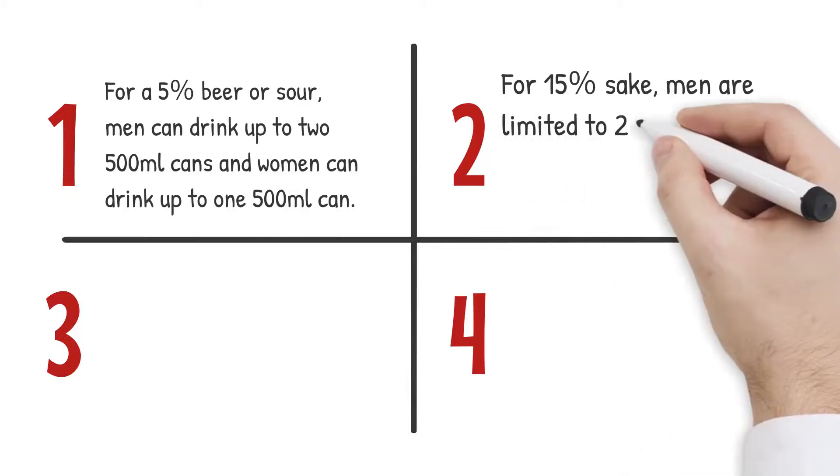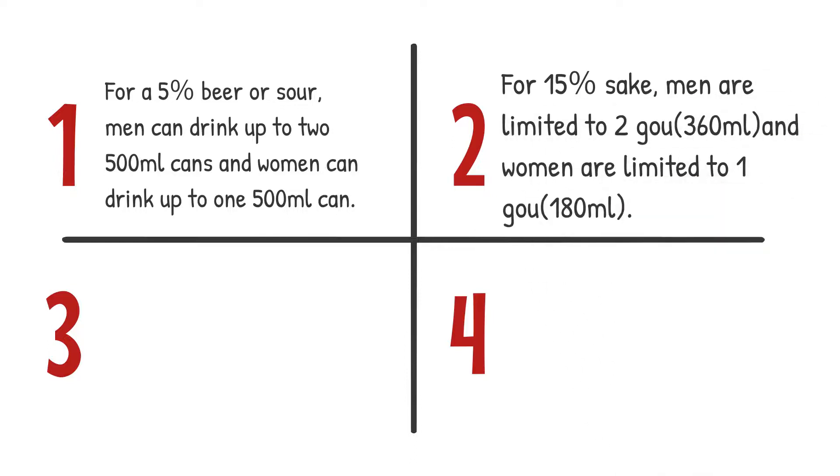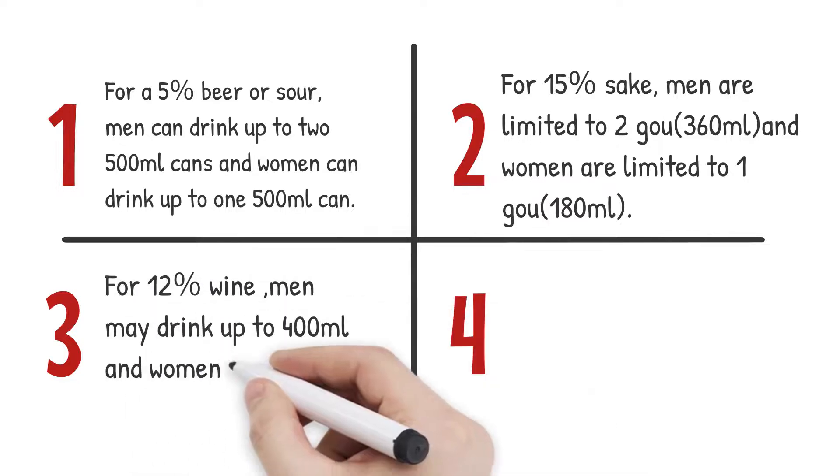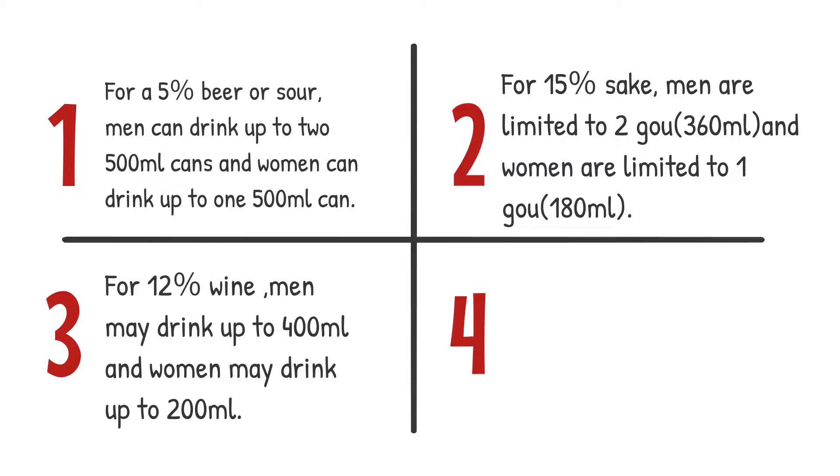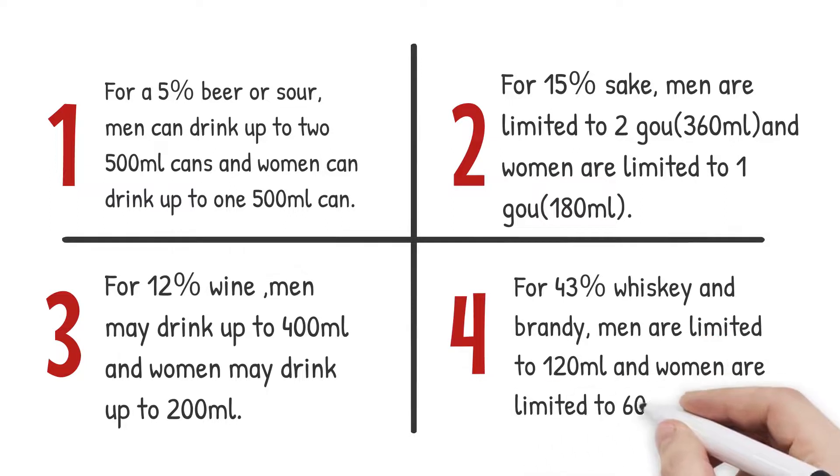For 50% sake, men are limited to two go and women are limited to one go. For 12% wine, men may drink up to 400ml and women may drink up to 200ml. For 43% whiskey and brandy, men are limited to 120ml and women are limited to 60ml.